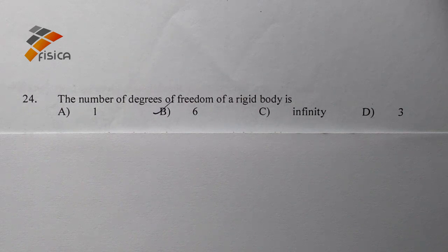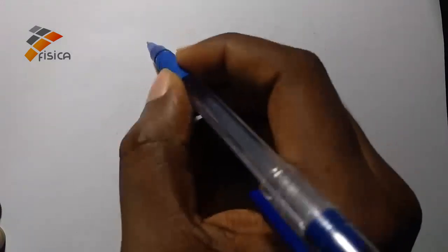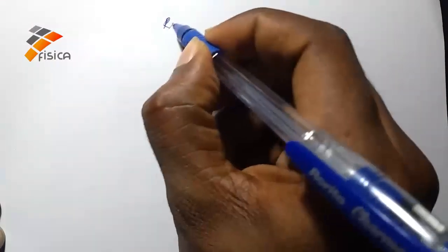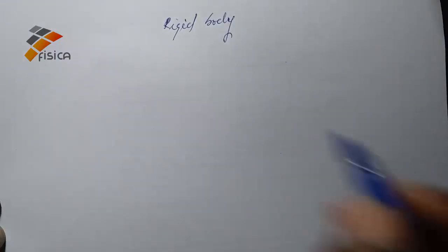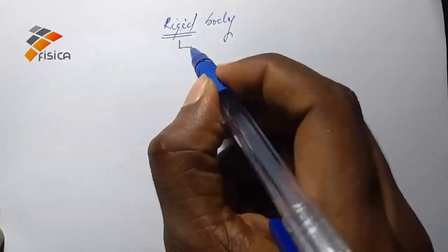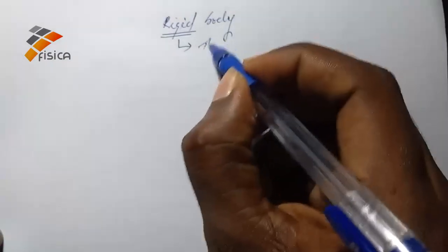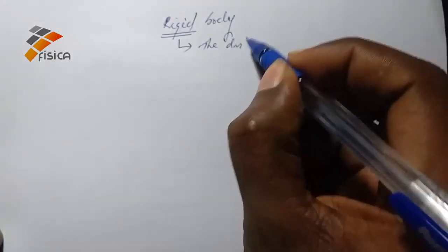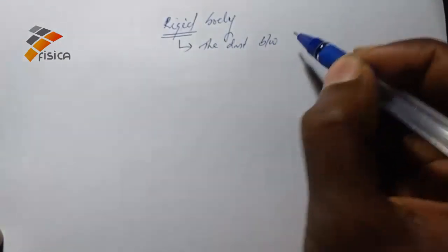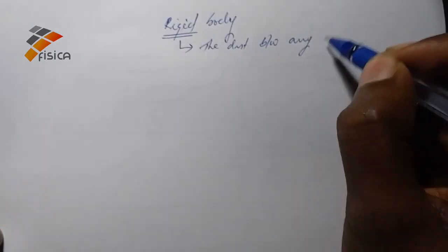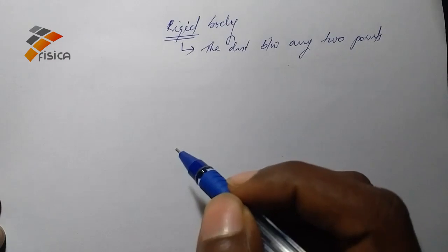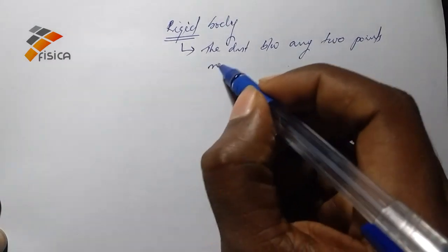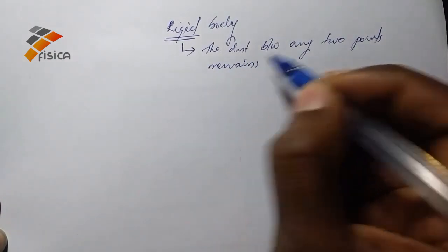So let us check which is the answer. Rigid body means it is rigid, that means the distance between any two points of a rigid body remains constant.